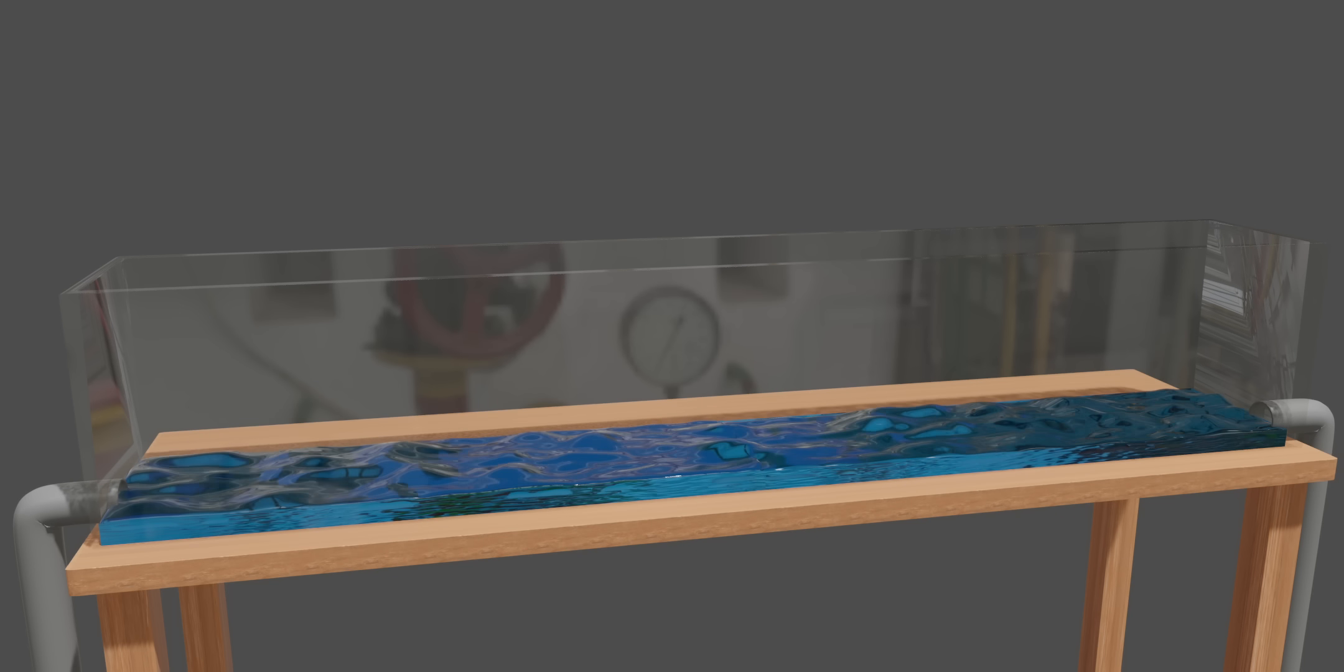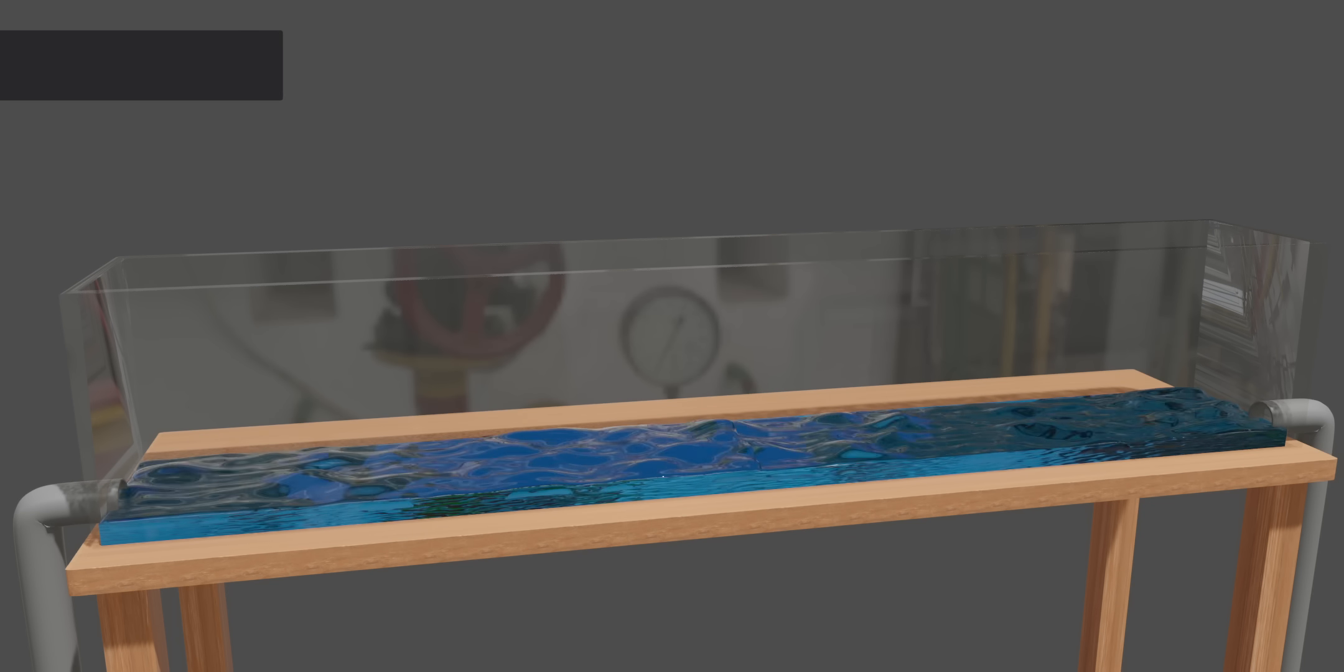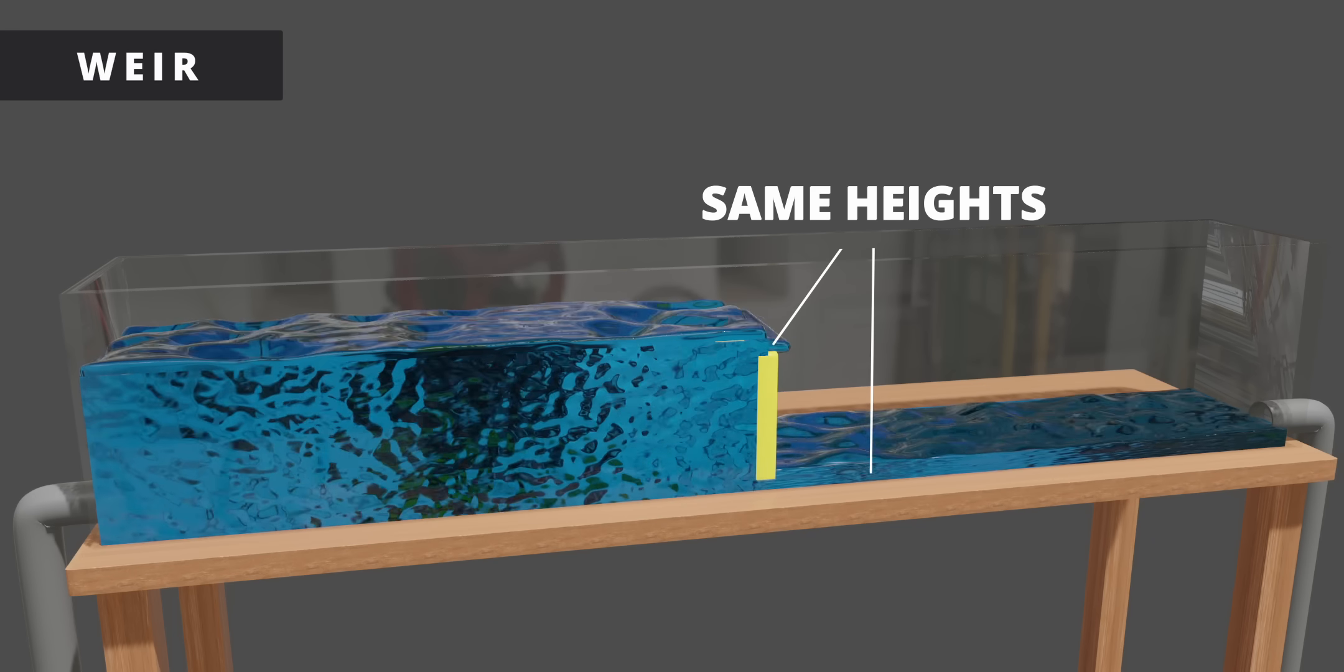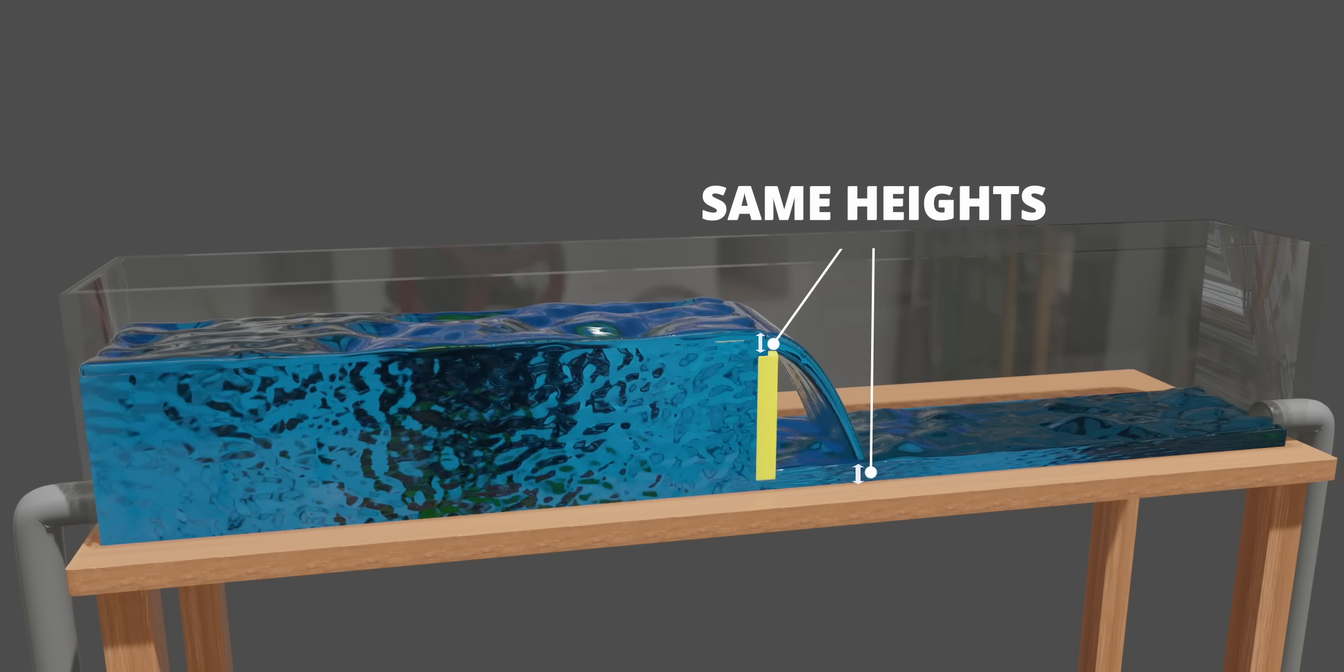Suppose you have an open-channel flow like this. You introduce a simple structure called a weir into the flow. What do you think will happen? Is this your answer? Unfortunately, your answer is incorrect.